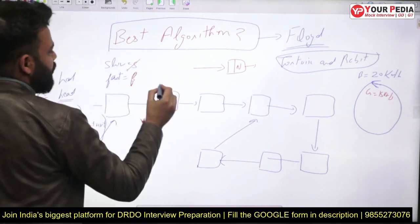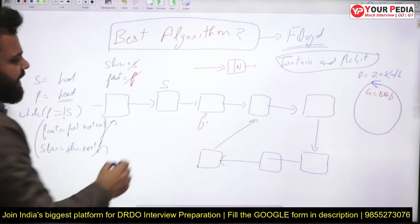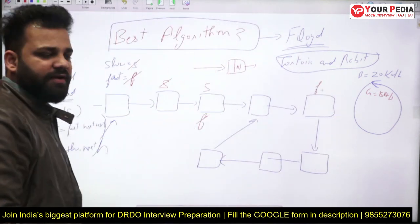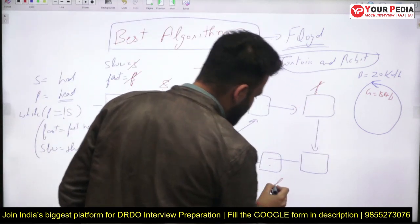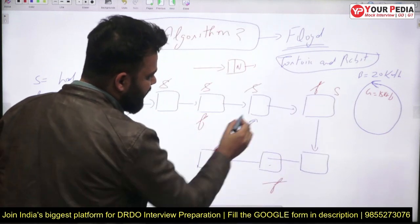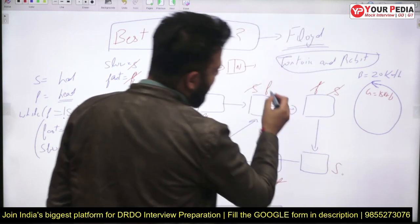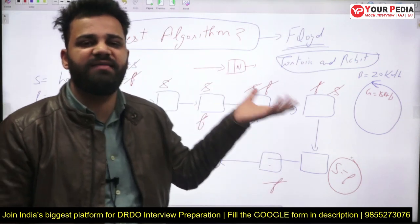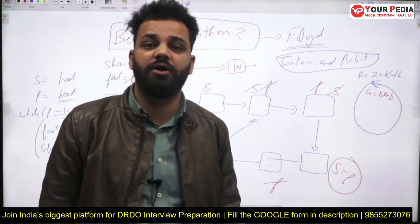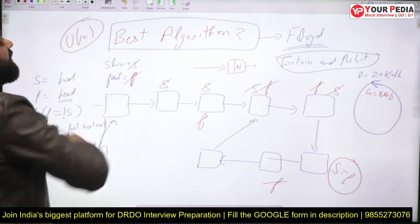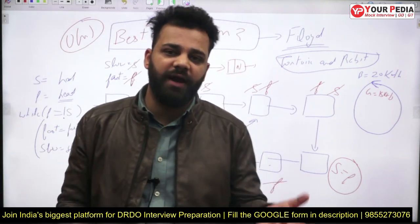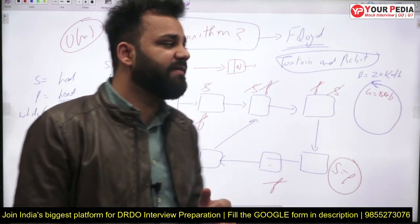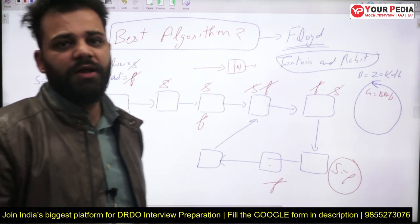Walking through the algorithm step by step: slow moves one step, fast moves two. After several iterations, slow and fast pointers end up at the same node, confirming the cycle. This is the best algorithm with O(n) time complexity and no constraints like needing a large hash table or prior knowledge of list size.